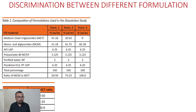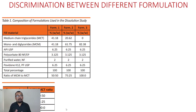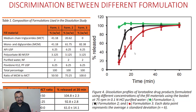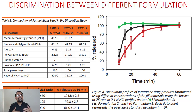Three development formulations are compared. The critical excipients are medium chain triglycerides (MCT) and mono and diglycerides (MCM). In formulation 1 the ratio is 50:50, in formulation 2 it is 75:25, and in formulation 3 it is 100:0. Using 0.1N HCl, 900 mL, basket at 75 rpm, green (F1), black (F2), and red (F3) lines each show distinct release profiles, confirming good discrimination between these different excipient ratios.